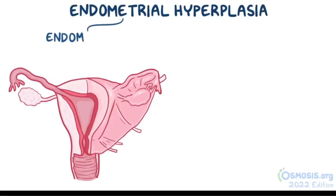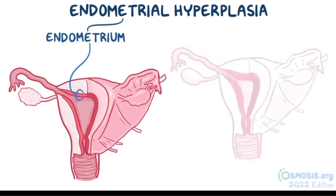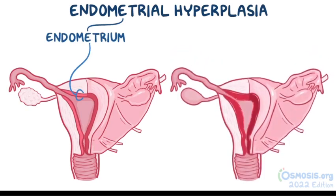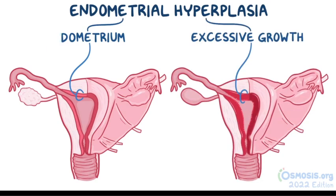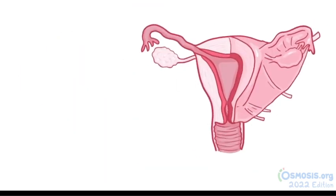Endometrial hyperplasia: endometrial refers to the endometrium, which is the inner lining of the uterus, and hyperplasia means increased growth. So endometrial hyperplasia means excessive growth of the inner lining of the uterus. The uterus consists of three layers.